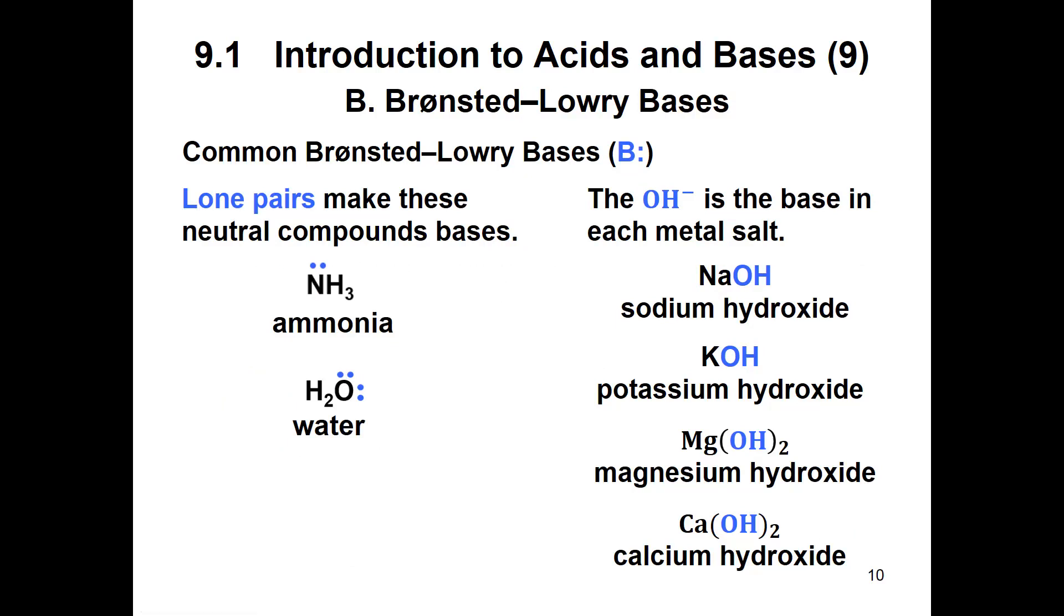Lone pairs make these neutral compounds. Ammonia which has a lone pair, water if you recall has two lone pairs. The hydroxide is going to be the base in each metal. If you have sodium metal you're going to have sodium hydroxide, if you have potassium you're going to have potassium hydroxide. With the hydroxides you're going to see most of those are going to be strong bases, whereas ammonia is a weak base because it doesn't have the OH.